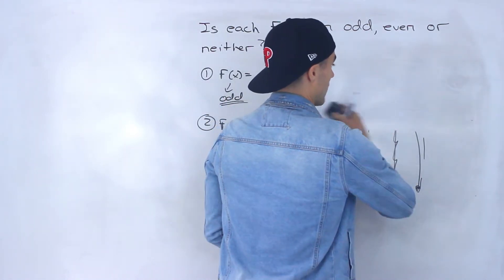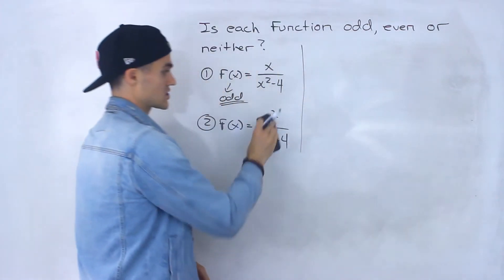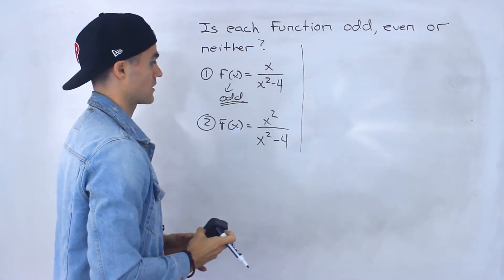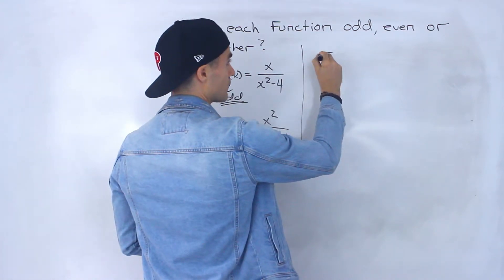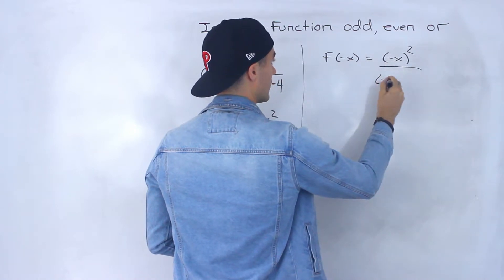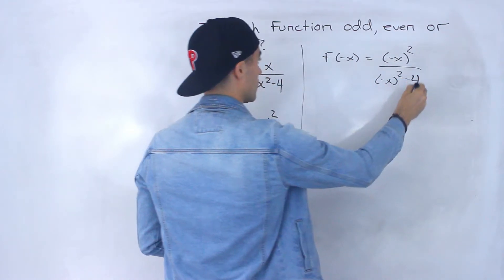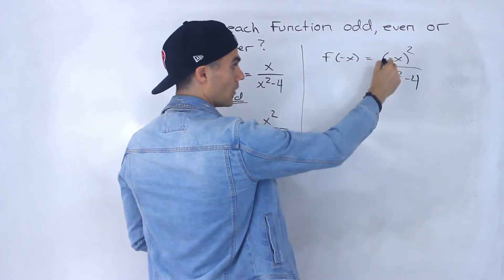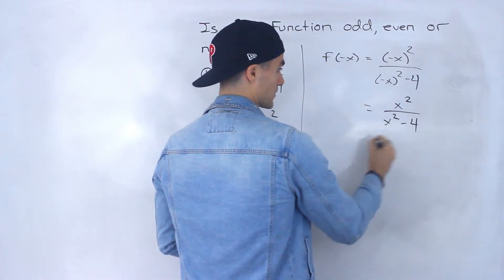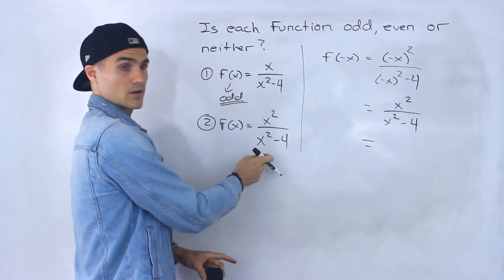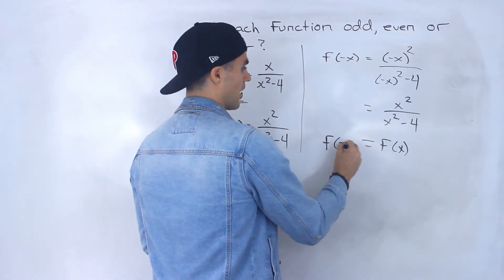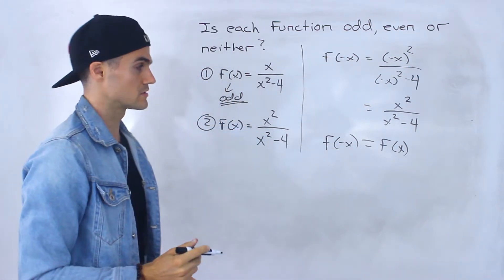What about the second function? We have f of x equals x squared over x squared minus 4. The only thing that changed is we have x squared up top. So what's f of negative x? We have negative x squared over negative x squared minus 4. We know negative x squared is x squared and negative x squared is x squared. Notice we end up with the original function f of x. So f of negative x equals f of x.